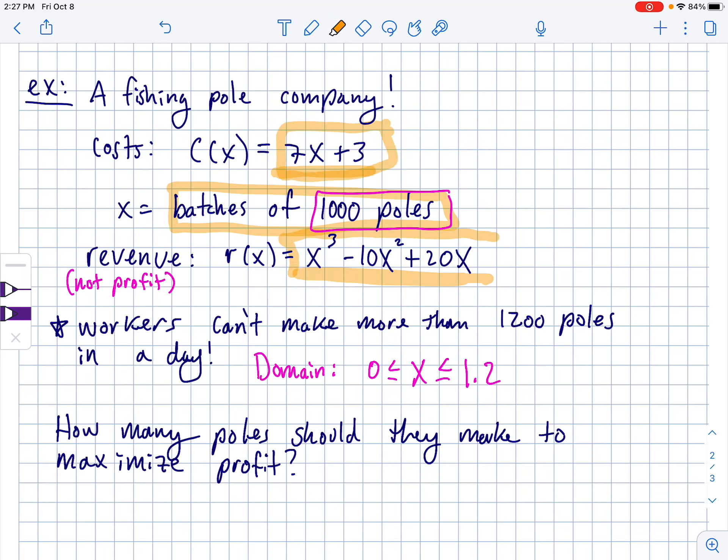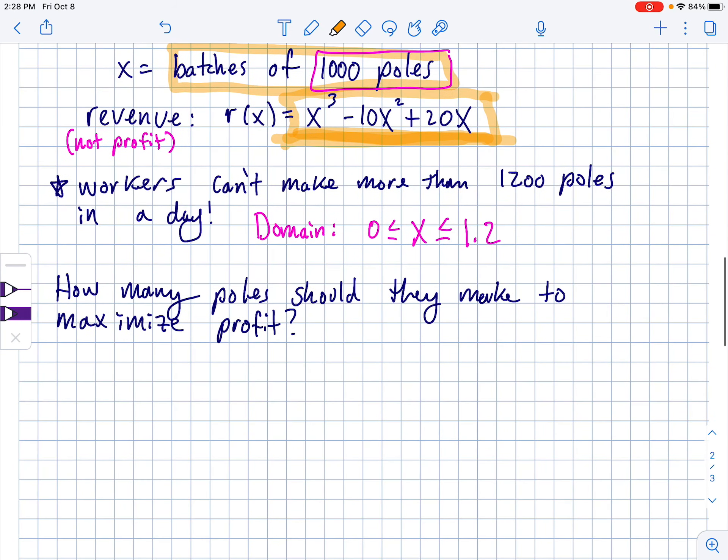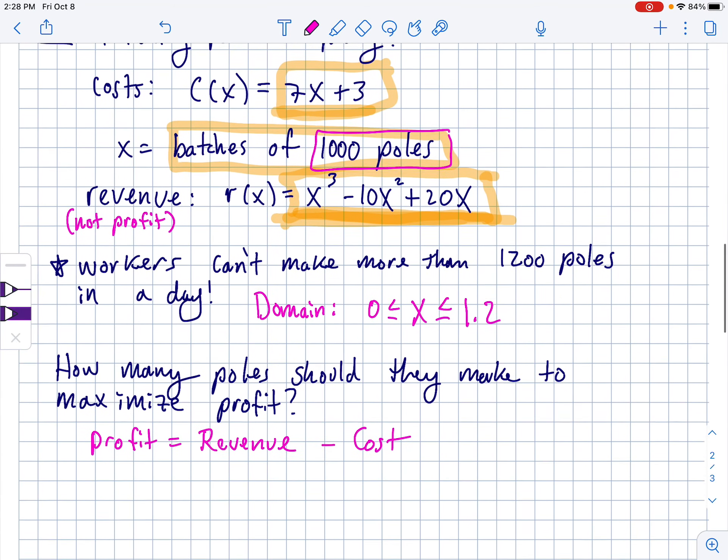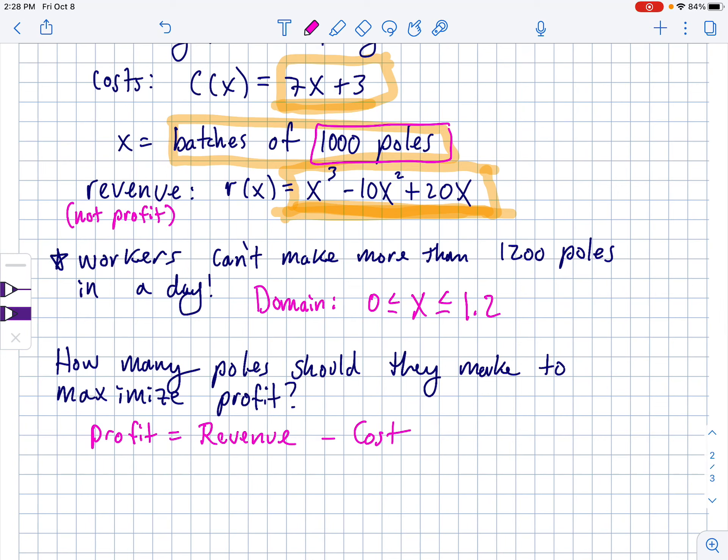So when you think about this, there's this cost for them to make poles. It's 7X plus 3, but then they get money for those poles of X cubed plus 10X squared plus 20X. So if they make just one pole, it's not going to cost them much, but it's going to create not that much revenue. There's this magic number that's somewhere in between. Like if you make millions of poles, it's not going to necessarily mean more and more profit because this is a cubic right here. So in general, profit is equal to revenue minus cost.